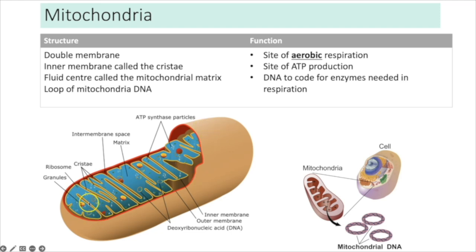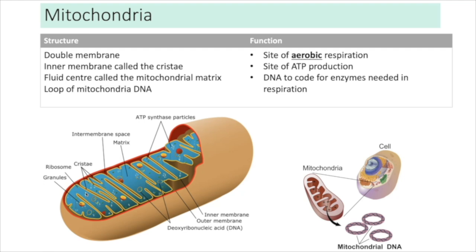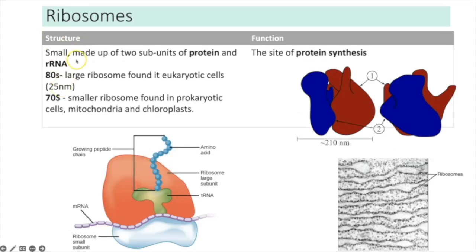Mitochondria are double membrane-bound organelles with an outer membrane and an inner membrane that folds inward to create the cristae. The fluid centre is the mitochondrial matrix, the site of some stages of aerobic respiration. Mitochondria contain their own ribosomes and loops of DNA so they can create the enzymes necessary for respiration. They are the site of aerobic respiration and therefore ATP production. The ribosomes in mitochondria are 70S — the smaller type also found in prokaryotic cells.